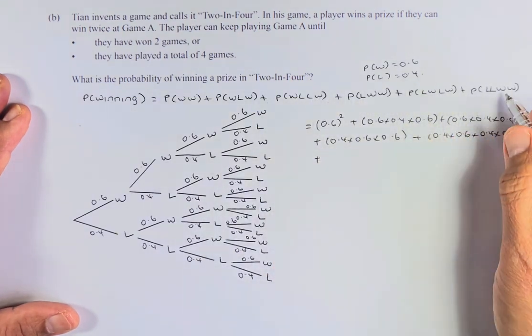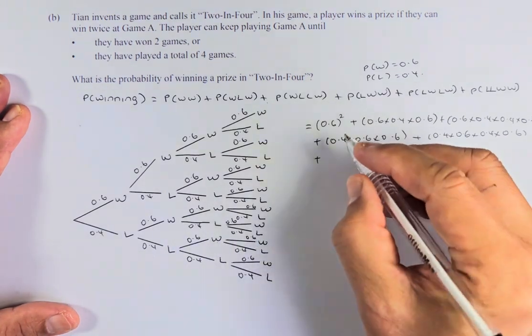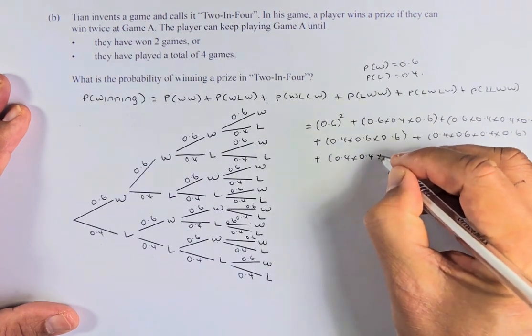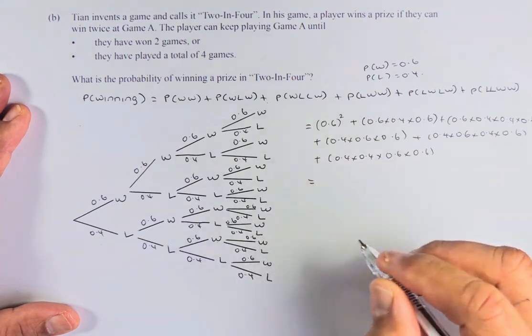The last one is lose-lose-win-win. So it's going to be 0.4 times 0.4 times 0.6 times 0.6. So now we are going to simplify them.